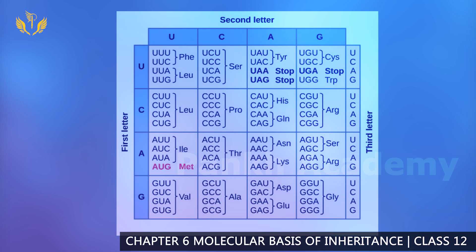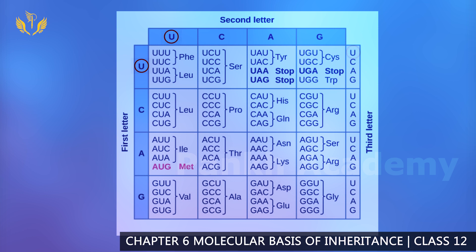Now let's look at this codon table. You can see U, C, A, G on the top and sides. We multiply them: UUU, UUC, UUA, UUG, and so on. This gives us all 64 codon sequences. Scientists successfully used this to encode how genes and proteins carry and transmit information.